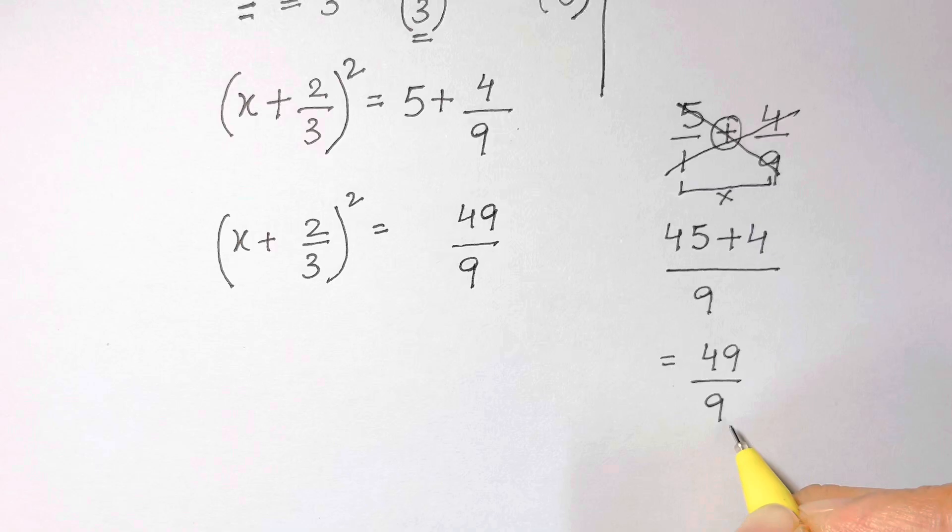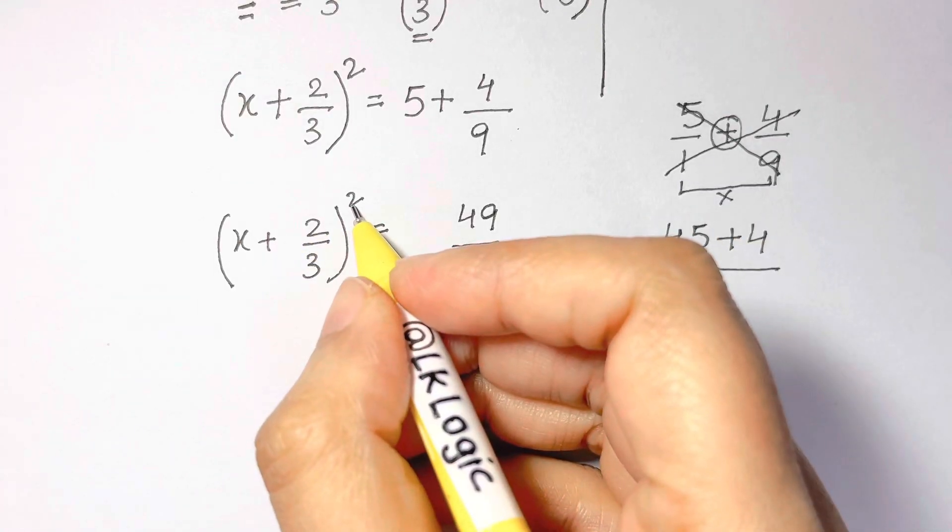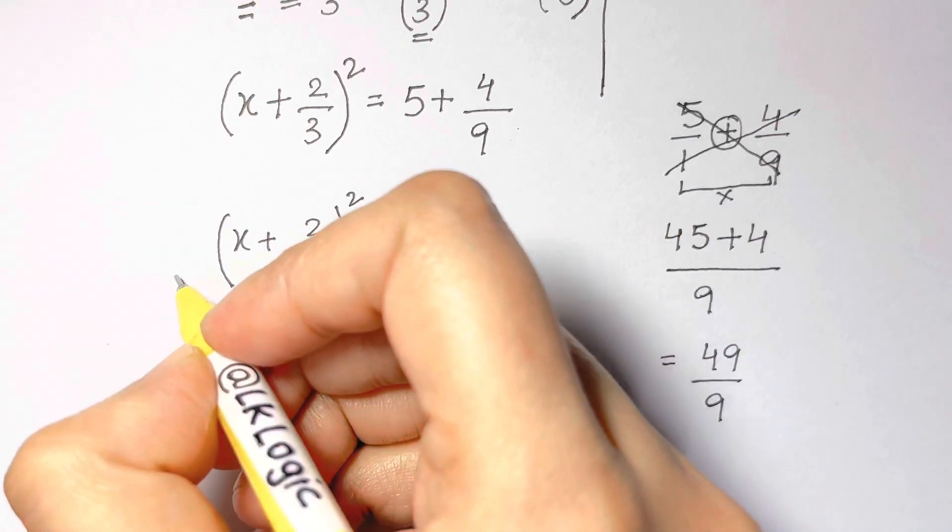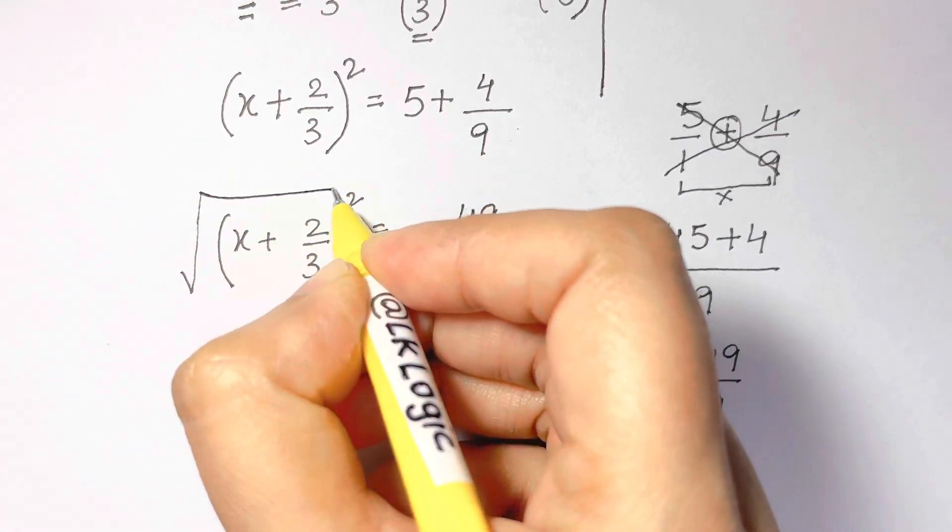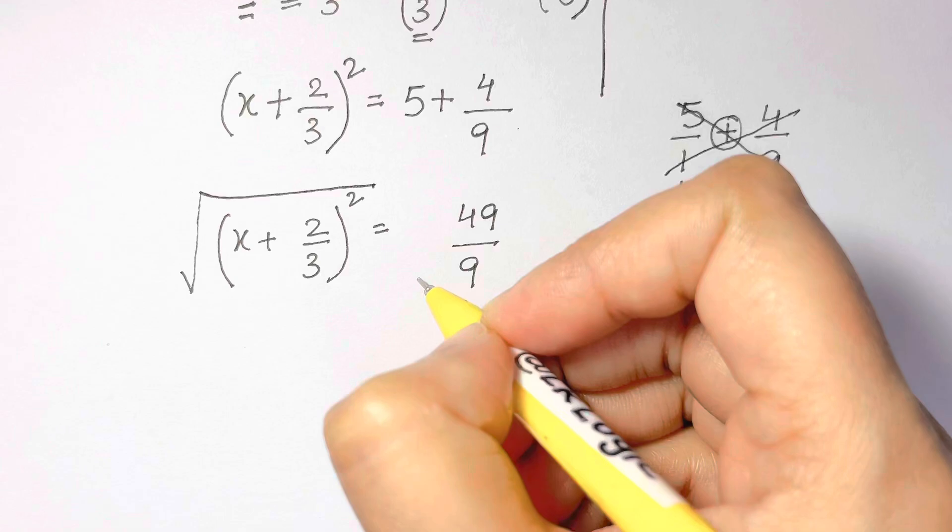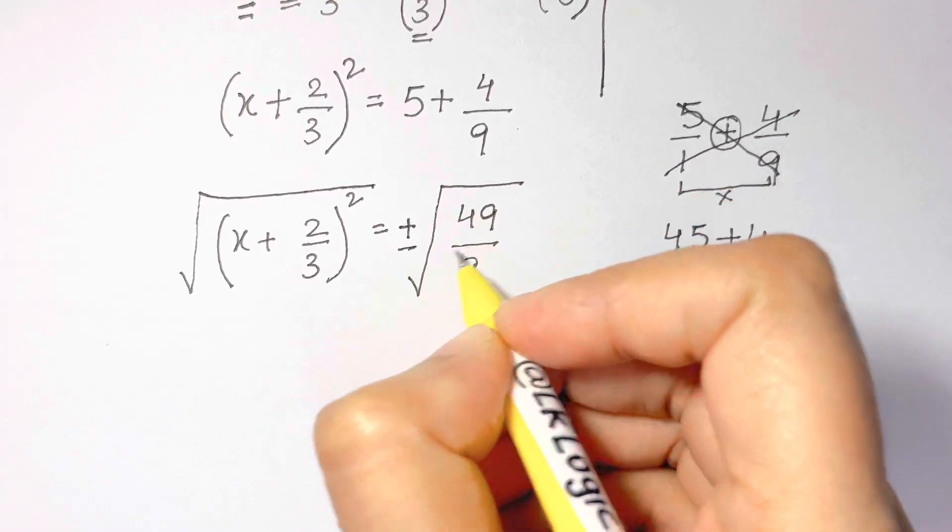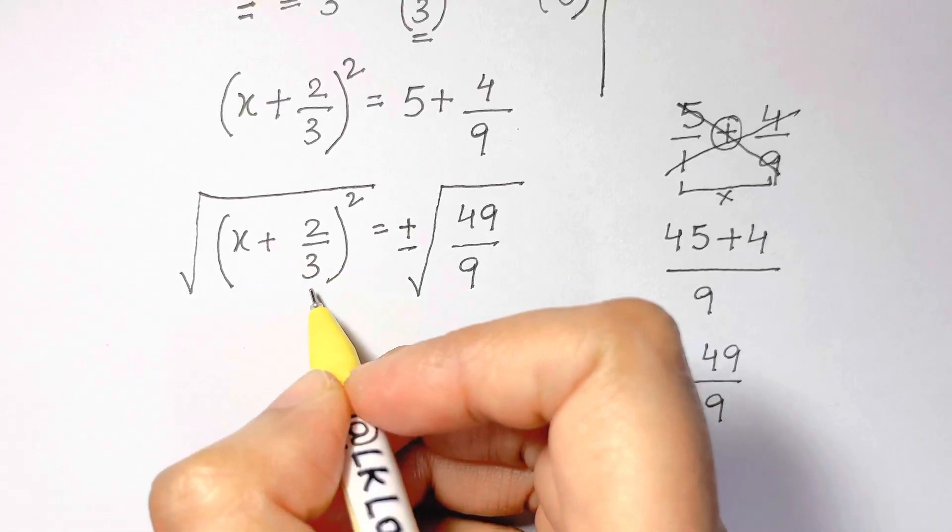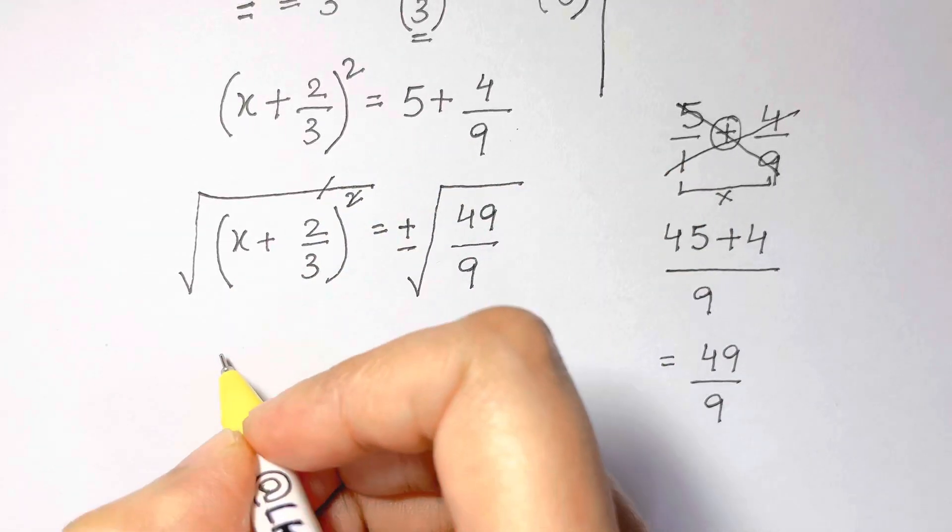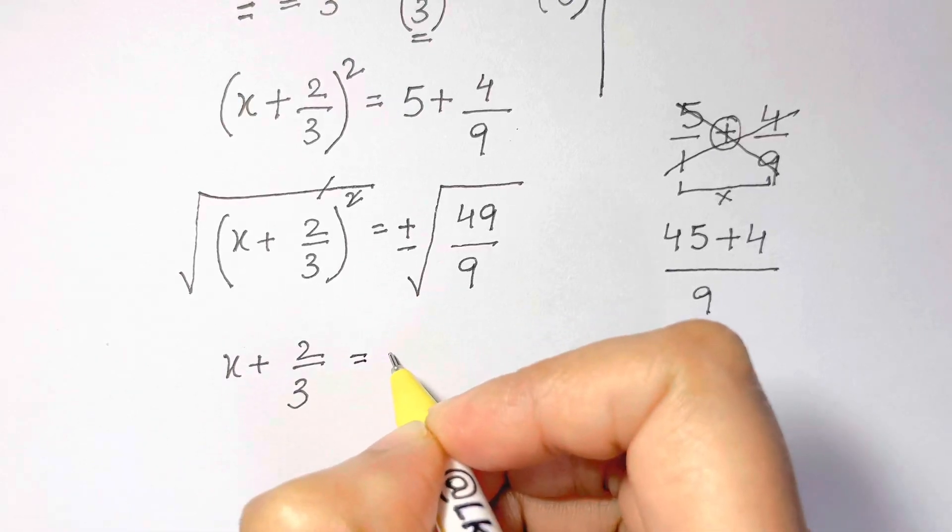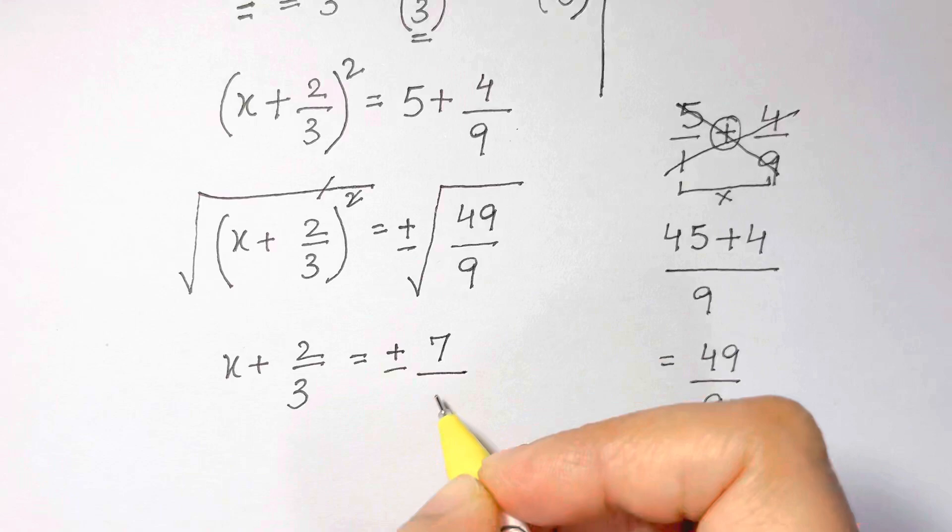The next step we want to get rid of this square because we want to solve for x. So how to undo this square? We are going to take square root on both sides. Square root on this side with positive and negative sign as well. You can see the square and square root gets cancelled here. We get x + 2/3 = ±√49/√9. Square root of 49 is 7 and square root of 9 is 3, so we get ±7/3.